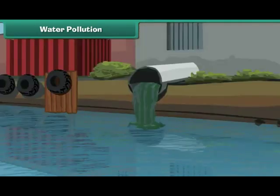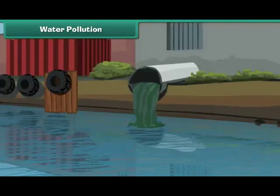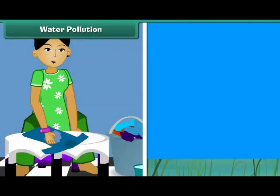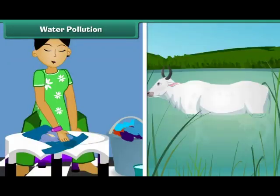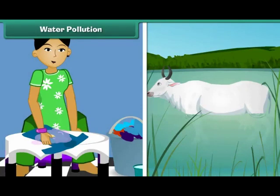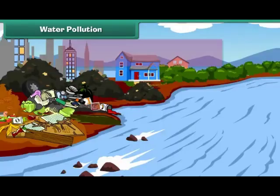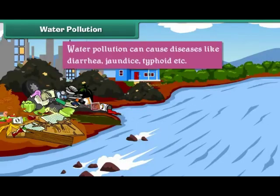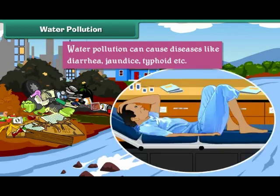Domestic and industrial sewage pollute water. Activities such as washing clothes and bathing animals in rivers also cause water pollution. Water pollution can cause diseases like diarrhea,